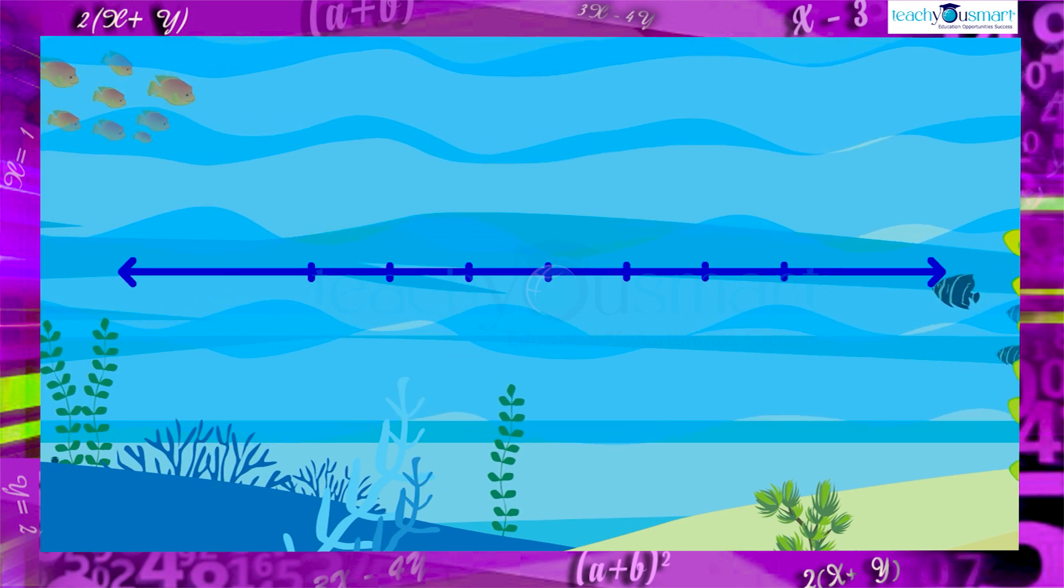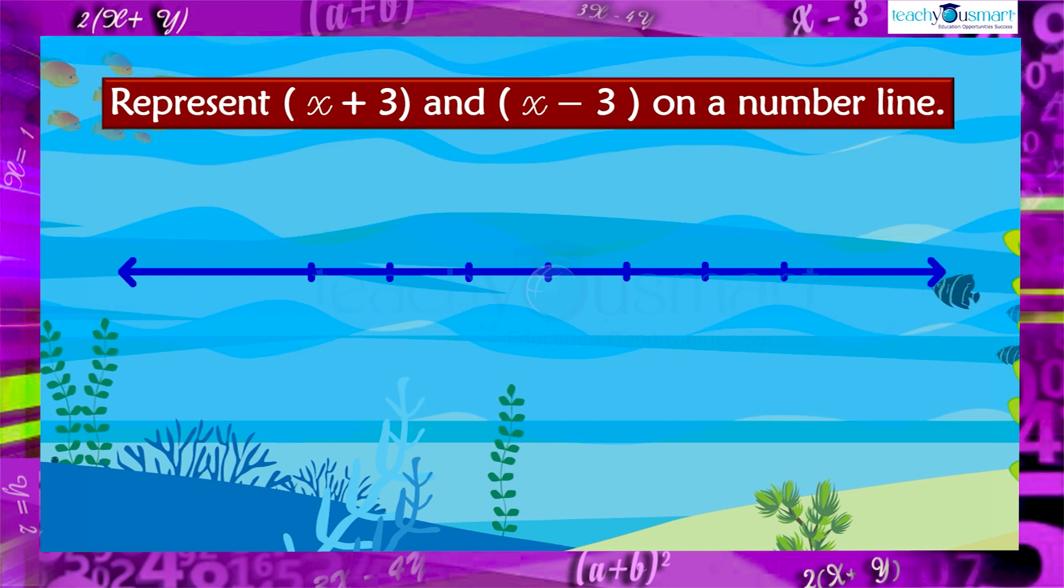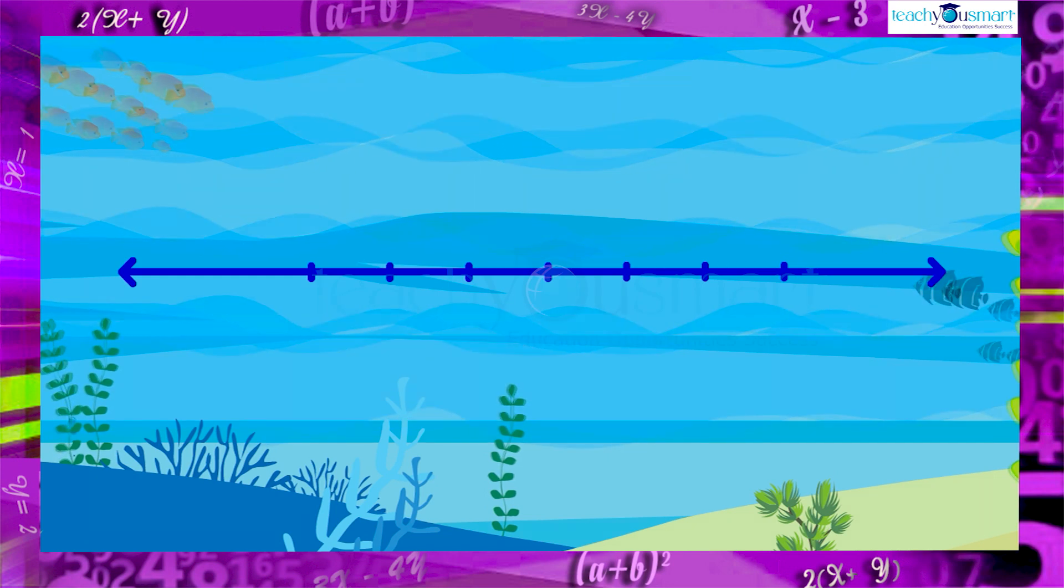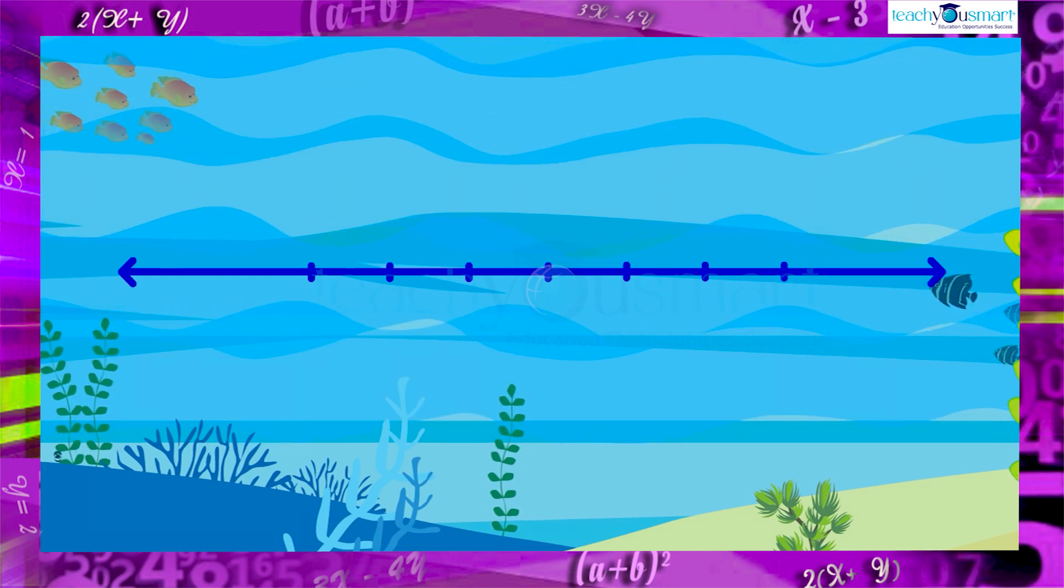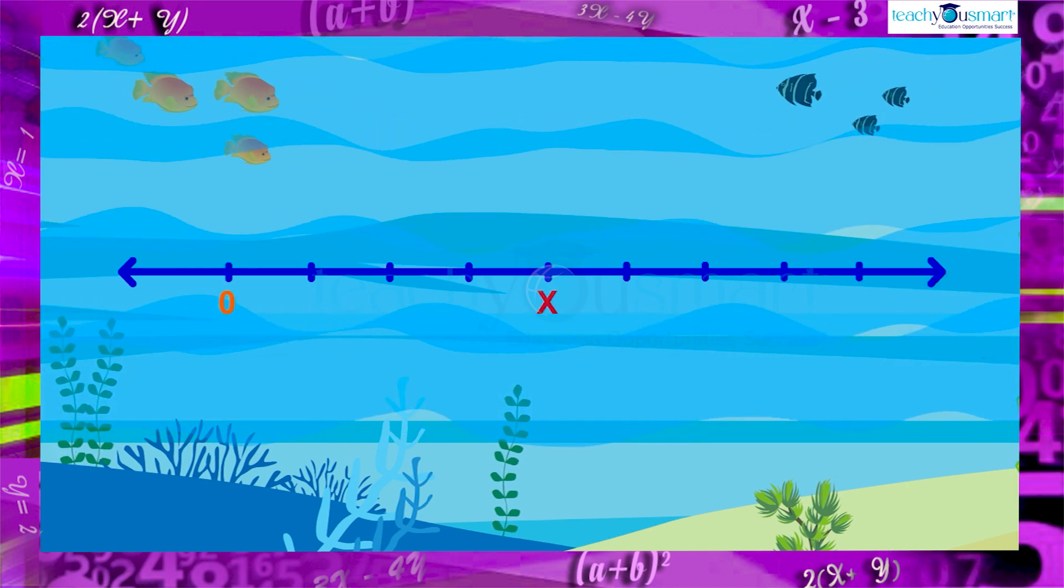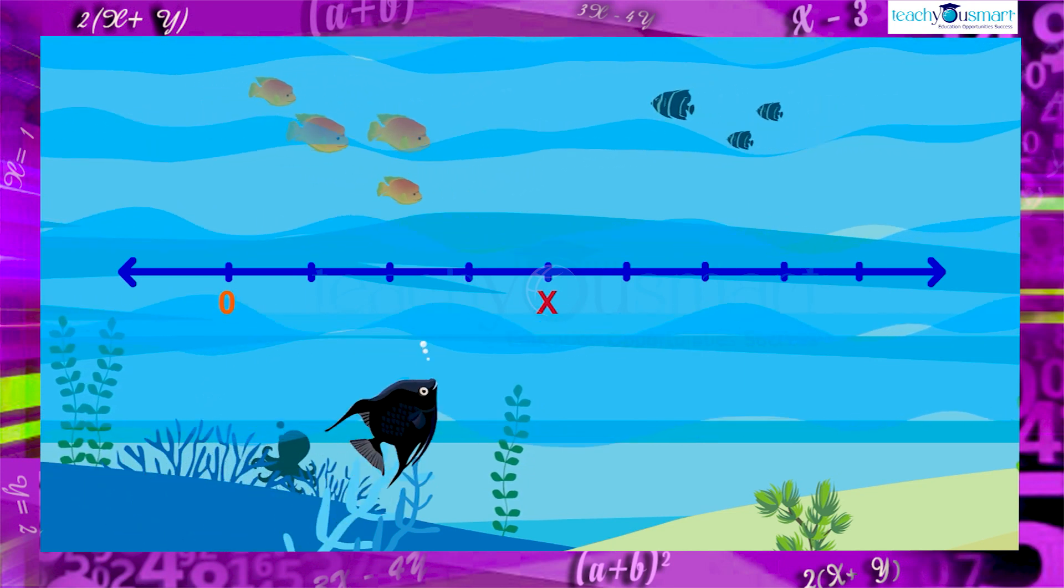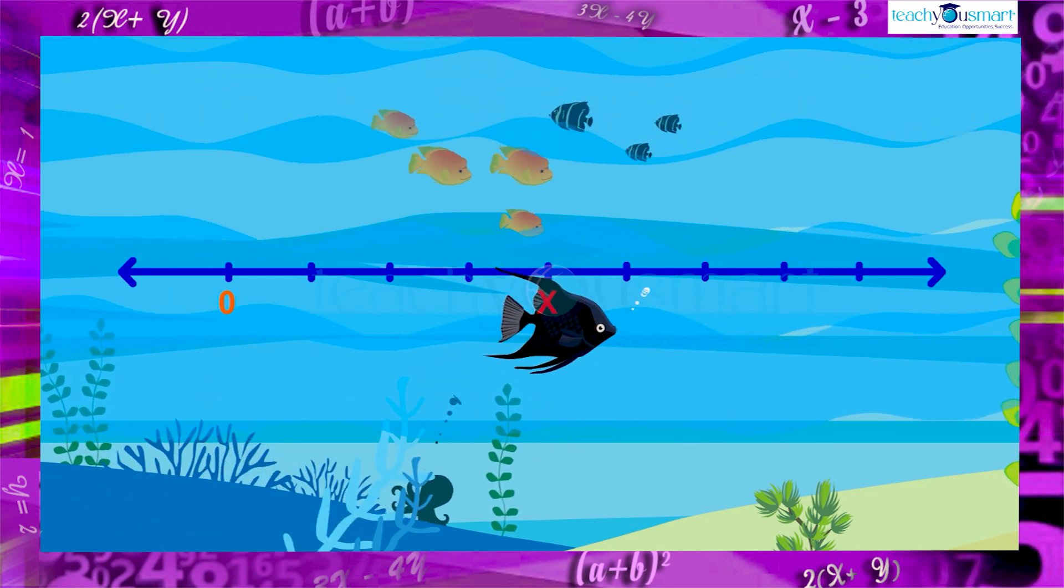Now consider the expressions x plus three and x minus three. What will be their position on the number line? Then, we can surely say that the variable x has a position from the origin. Mark it as x. Then the position of x plus three will be three units right of x.